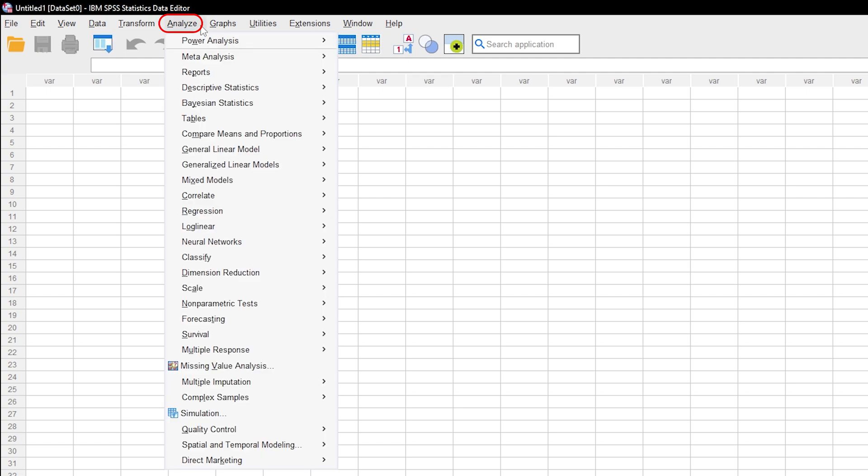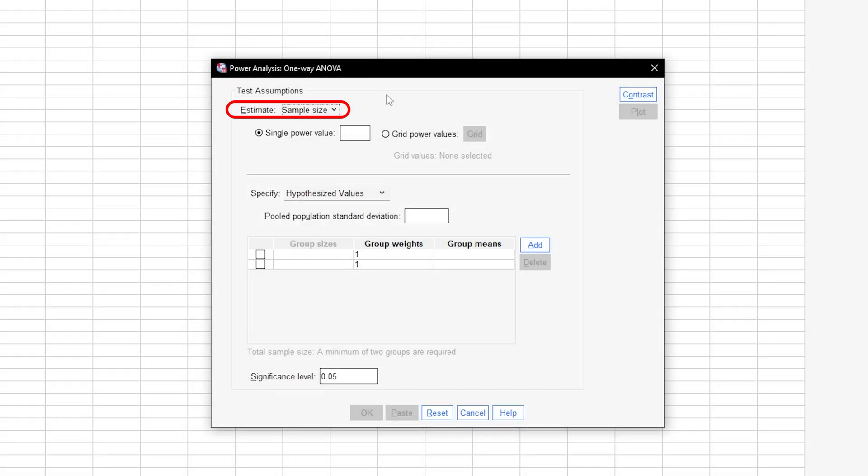In SPSS, go through Analyze, Power Analysis, Means, One-Way ANOVA. First, make sure that it says estimate sample size, since that is what you want to calculate.